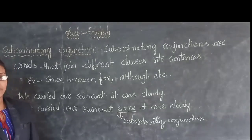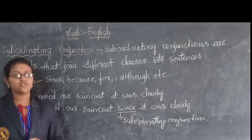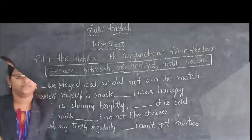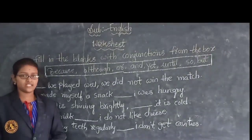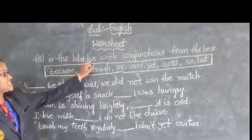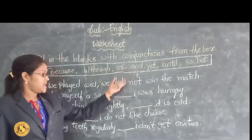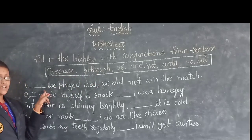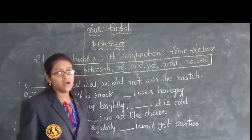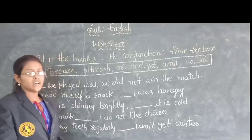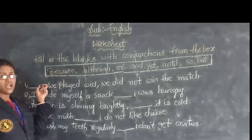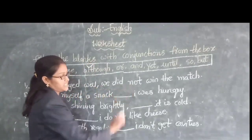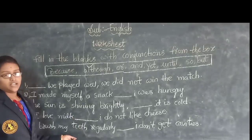So till now we have discussed about conjunction and also the types of conjunction. Based on this I am going to give you a worksheet. Everyone should solve the worksheet by watching the video carefully from start to end. The worksheet asks you to fill in the blanks with conjunctions from the box. For example, 'Dash we played well, we did not win the match' — the correct answer is 'Although'. Solve the remaining questions similarly.